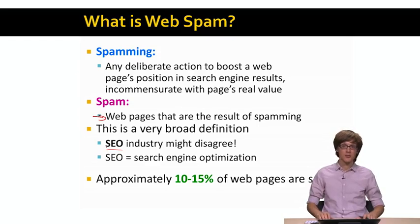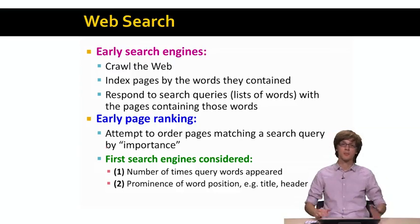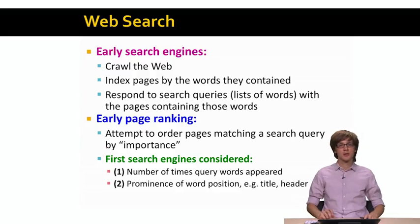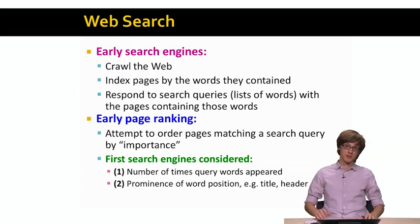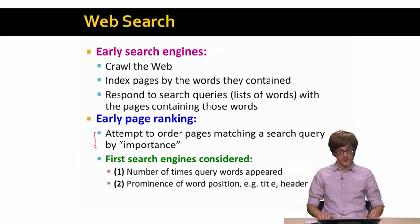It has been estimated that around 10 to 15% of web pages on the web are actually spam. So how did web spam really work? Early search engines operated the following way: they would crawl the web and collect web pages, index them by the words they contained, and then rank search results based on the number of times they mentioned a given search query term.